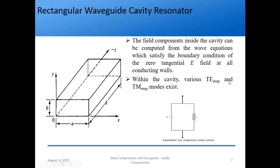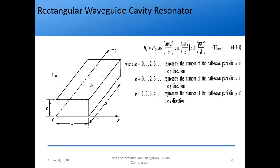Within the cavity, various TEMNP and TMNP modes exist. The equivalent circuit is the low frequency tuned LC circuit — it resembles inductors and capacitors but in waveguide form. We take the equations directly. Along the X direction we have dimension A, along Y we have B, and along Z we have D. The Hz field equation is: Hz = H0z · cos(MπX/A) · cos(NπY/B) · sin(PπZ/D), for the TEMNP mode.